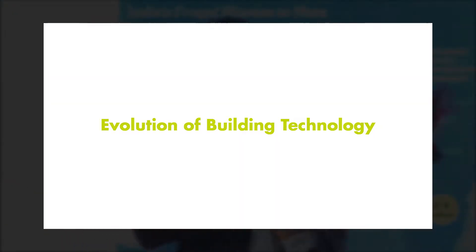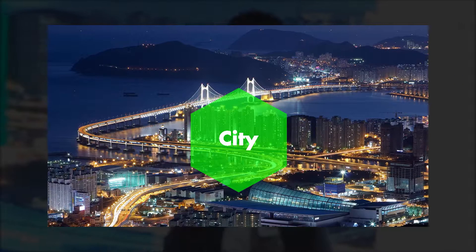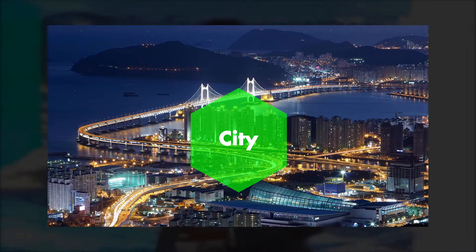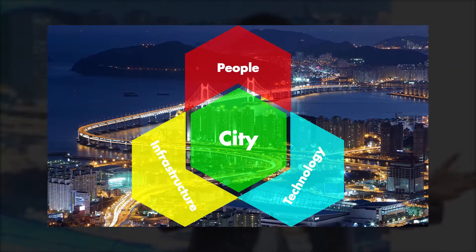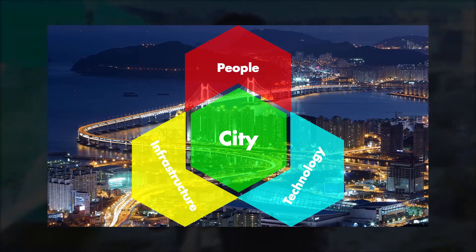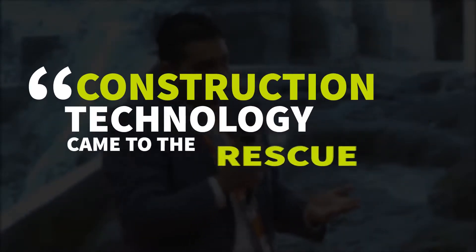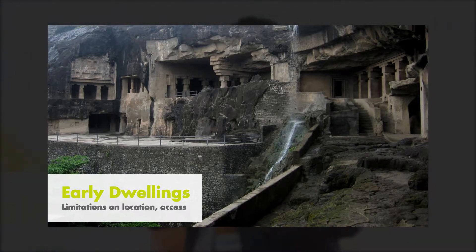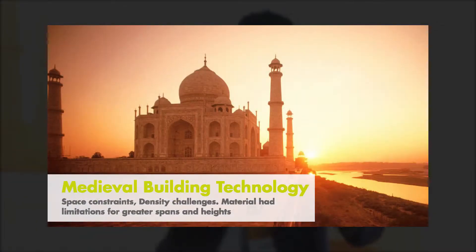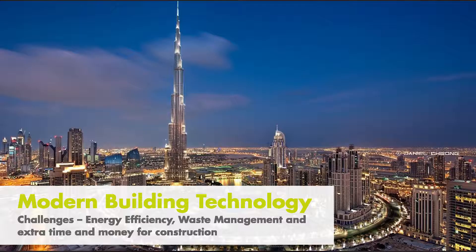What we want to do today is understand how technology evolved. Technology came with its own challenges. We had location access issues. Then construction technology came to the rescue — Flemish bonds, tongue and groove joints — using natural materials. But we started running into challenges: we wanted more space, urbanization. New materials like steel and concrete came into the picture.